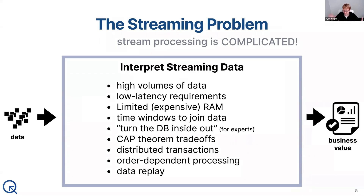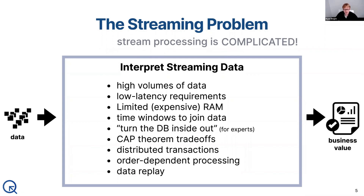It usually forces us to limit how data gets joined together — we can only join it if it arrives within certain time windows. It requires a lot of expertise to typically turn the data processing and data storage systems like a database inside out, so that data pipelines can be built by serious experts who basically have to recreate a database in a microservice architecture. They have to walk through all sorts of CAP theorem tradeoffs, deal with distributed transactions, and the order-dependent nature of their processing.